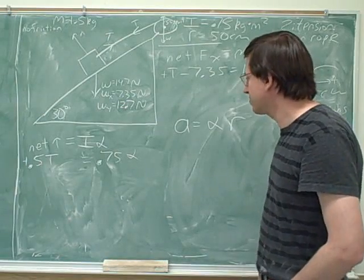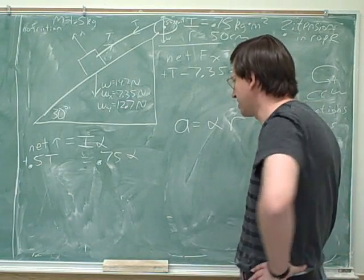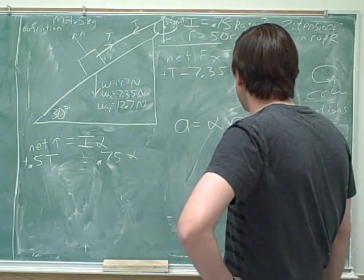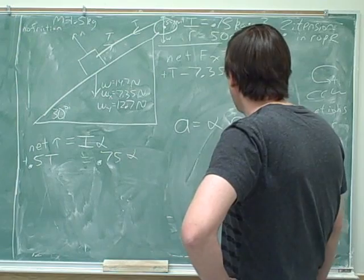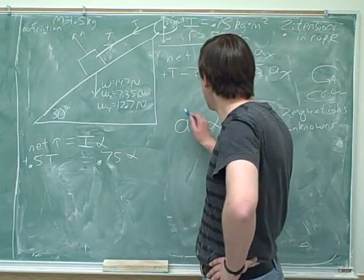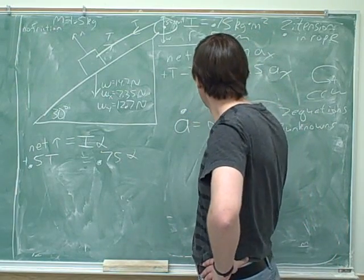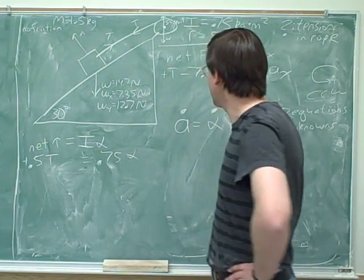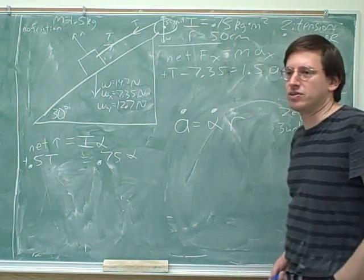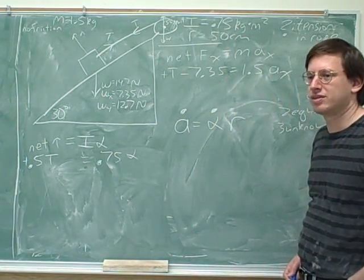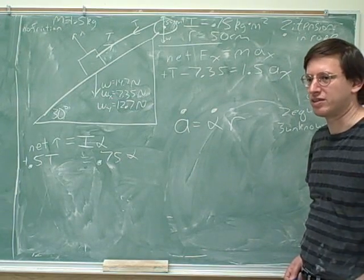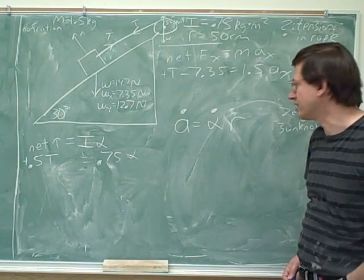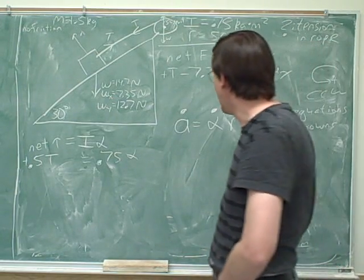There could be some tricky aspects here, so let's see what could be tricky about this. First of all, this only relates the magnitudes. We'll have to think about the sign separately. So this relates our magnitudes.